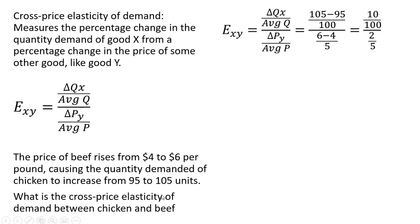So the change in quantity, the quantity goes up from 95 to 105. So we have a 10-unit increase in the quantity, 105 minus 95. And then the average quantity, the average of those two values, or the midpoint of those two values, is just 100. So in the numerator, we have 10 divided by 100, the change in quantity over the average quantity.